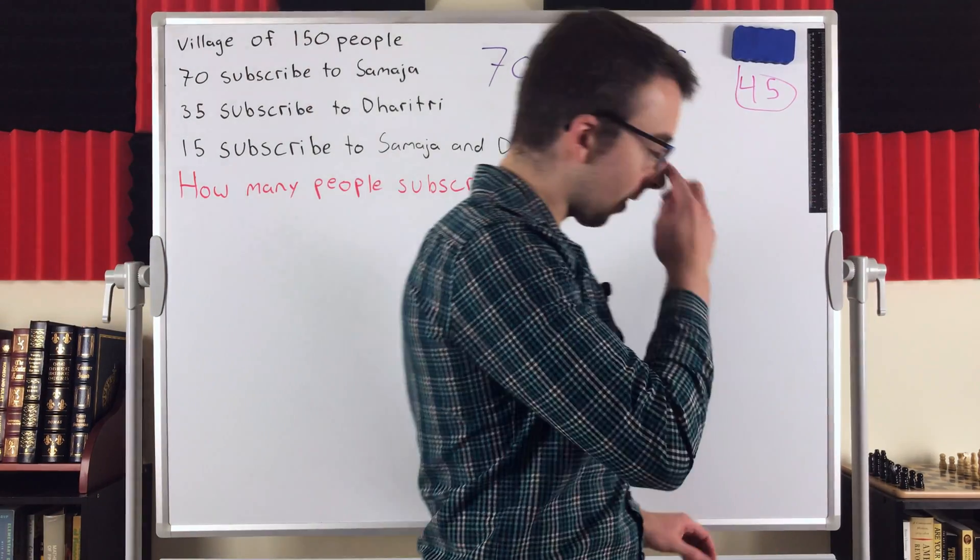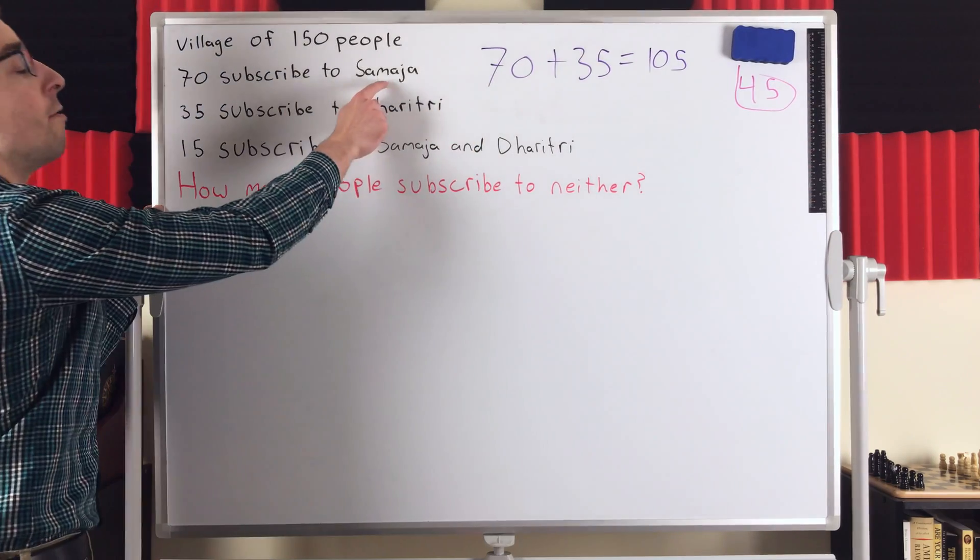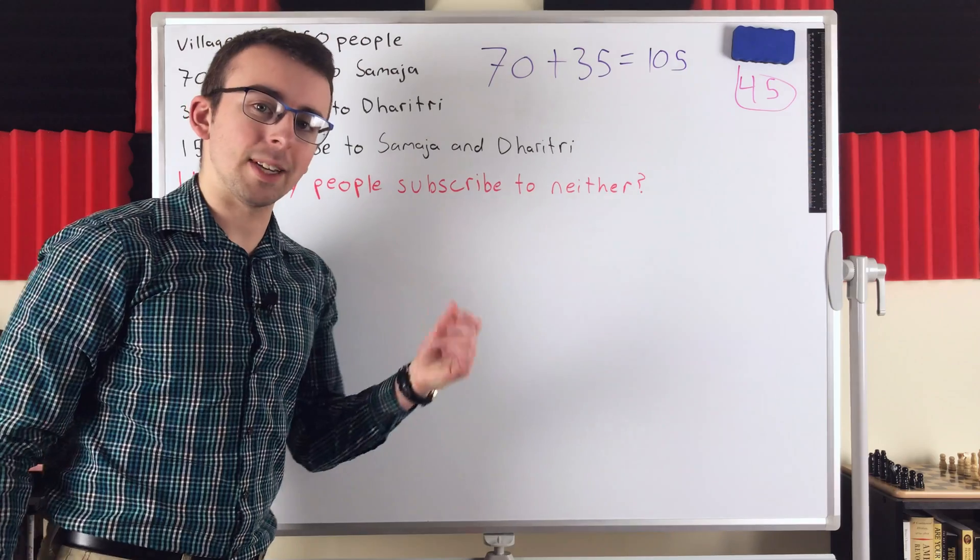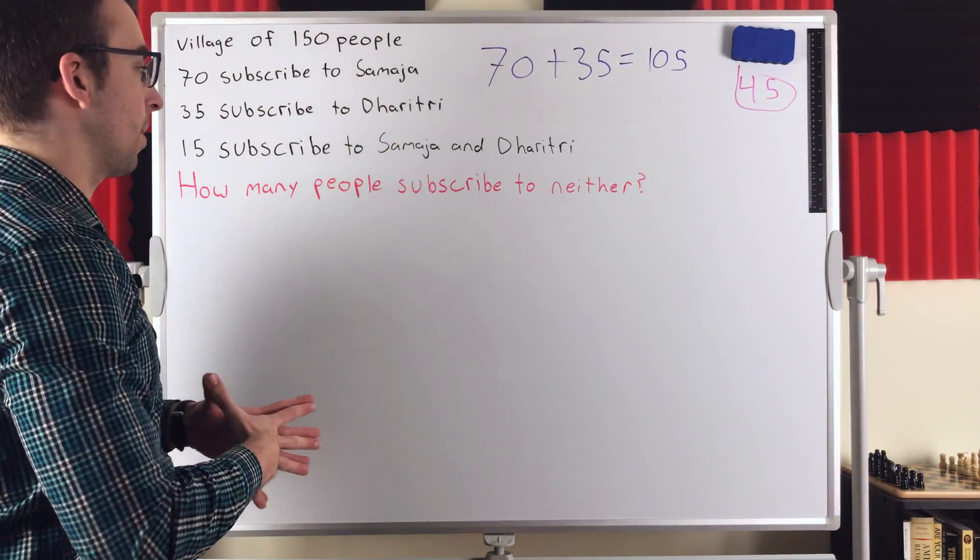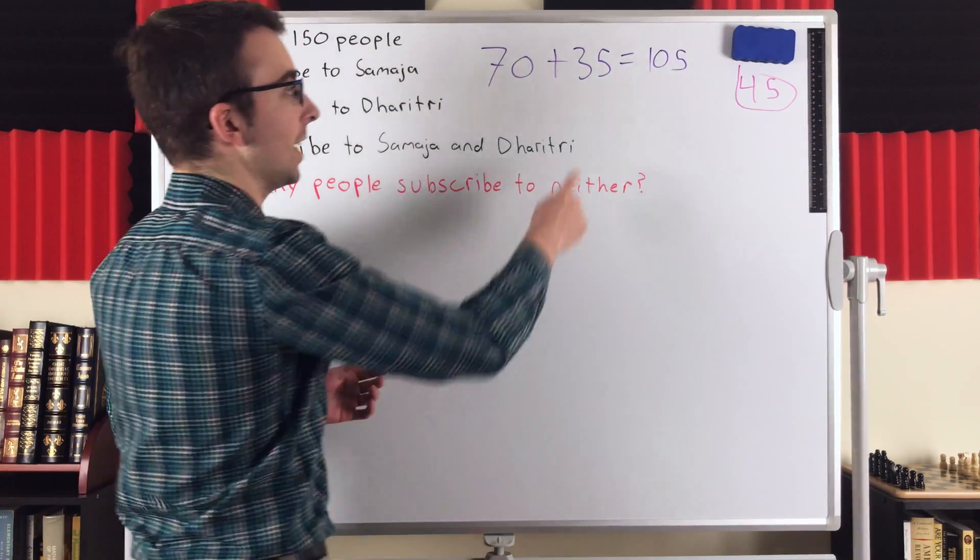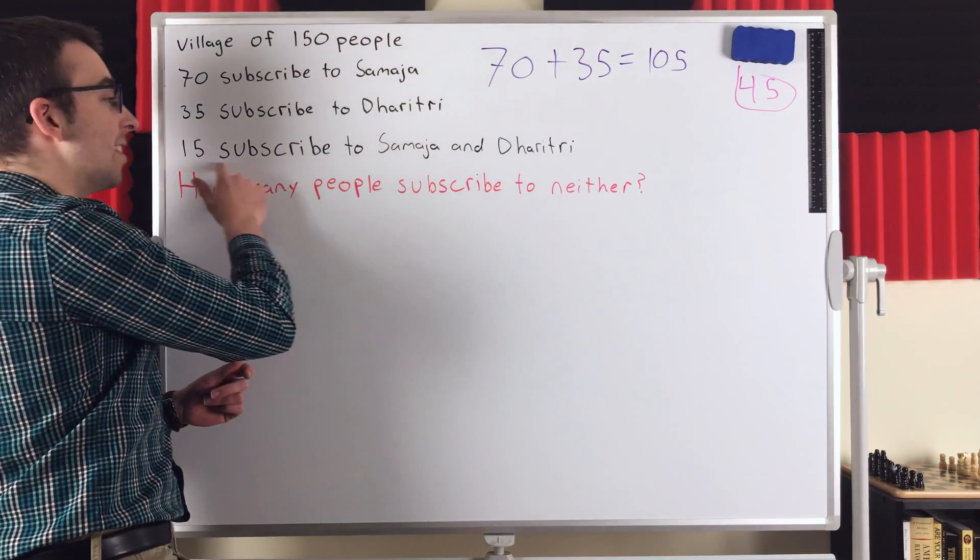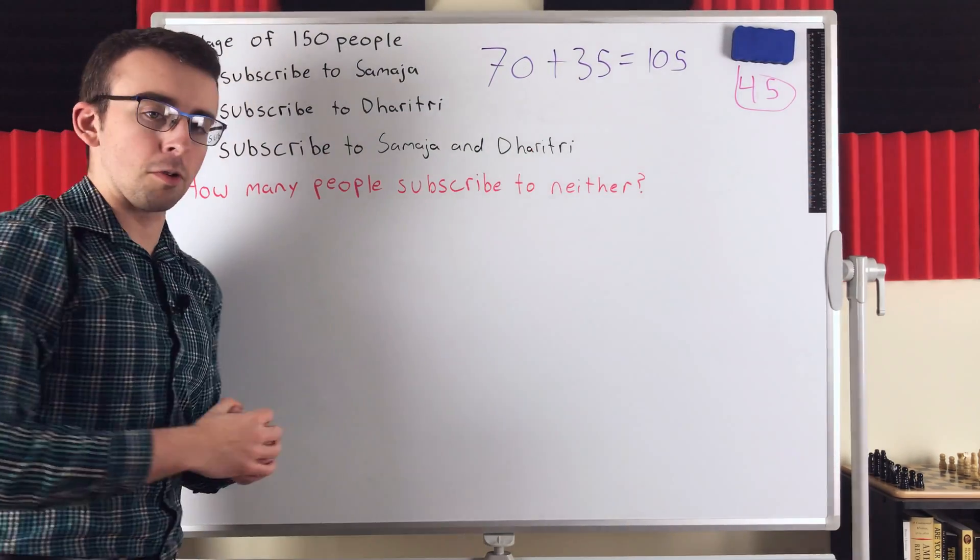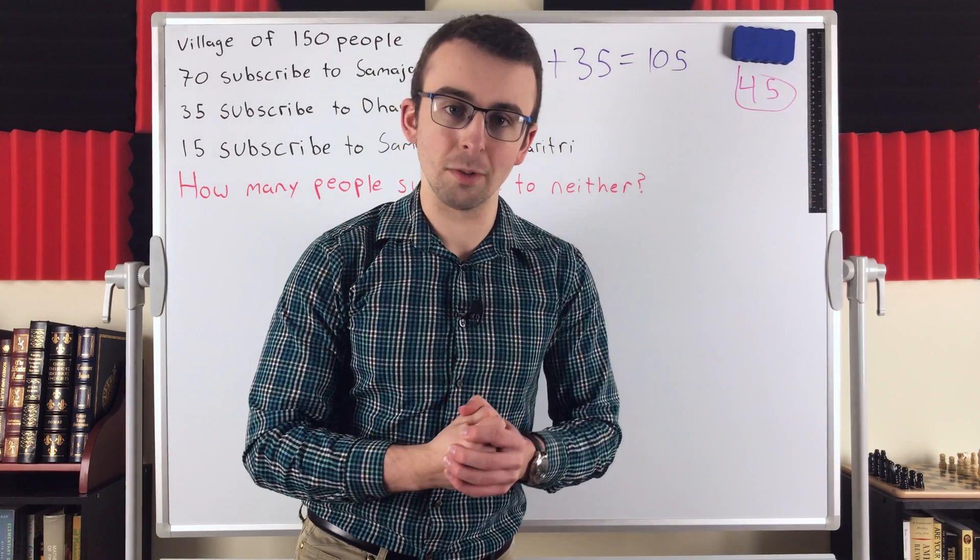The problem is that these 15 people who are subscribed to both papers, they're getting counted twice in this arithmetic. This group of 70 people who are subscribed to the Samajah counts these 15 people who are subscribed to both papers. Similarly, these 35 people who are subscribed to Dhritri also includes these 15 people. So we've double counted this particular group.